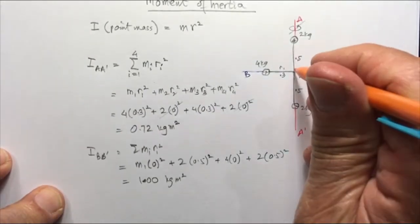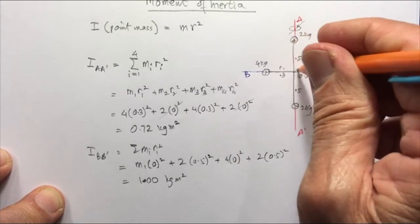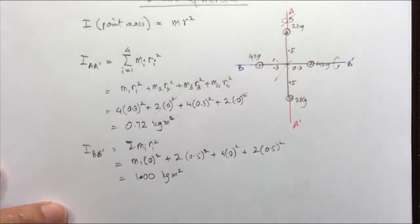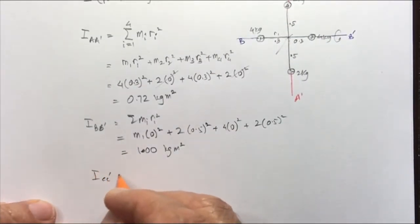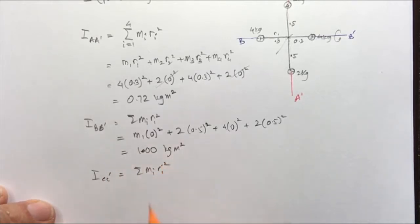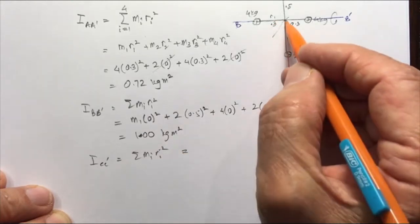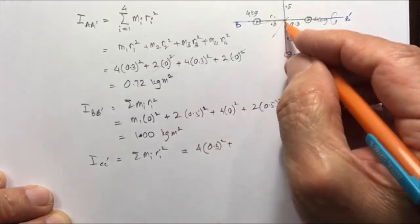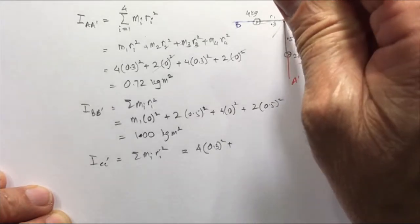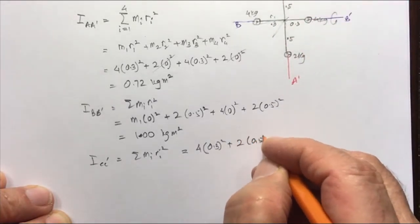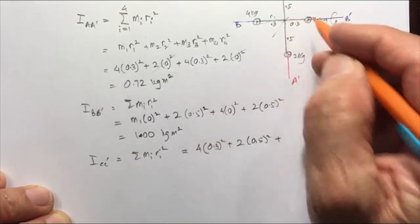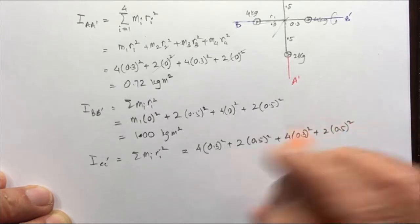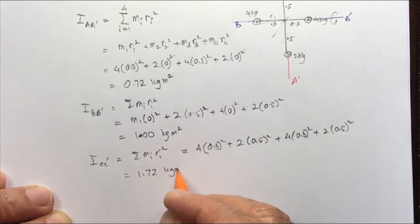We can also solve it for an axis perpendicular to the plane — the axis C-C prime coming out of the page, so the whole thing spins flat. Again using sum of M_i R_i squared: M1 is 4 kg at 0.3 meters, M2 is 2 kg at 0.5 meters, M3 is 4 kg at 0.3 meters, and M4 is 2 kg at 0.5 meters. Solving gives 1.72 kilogram meters squared.